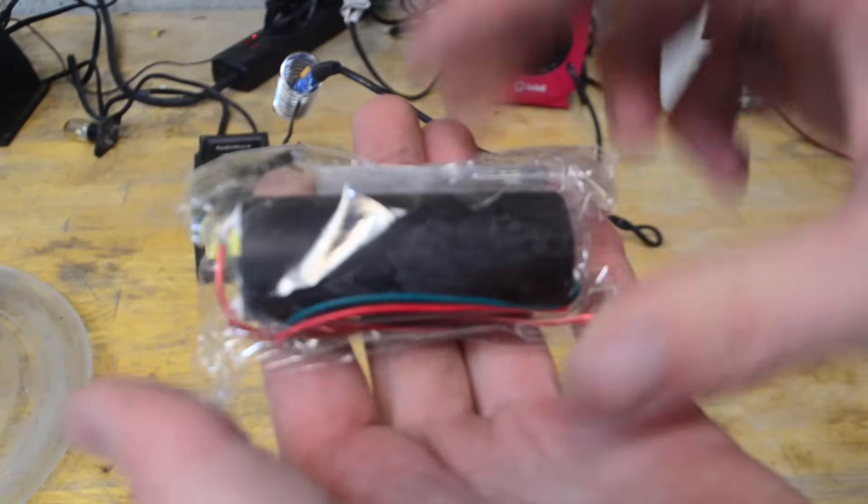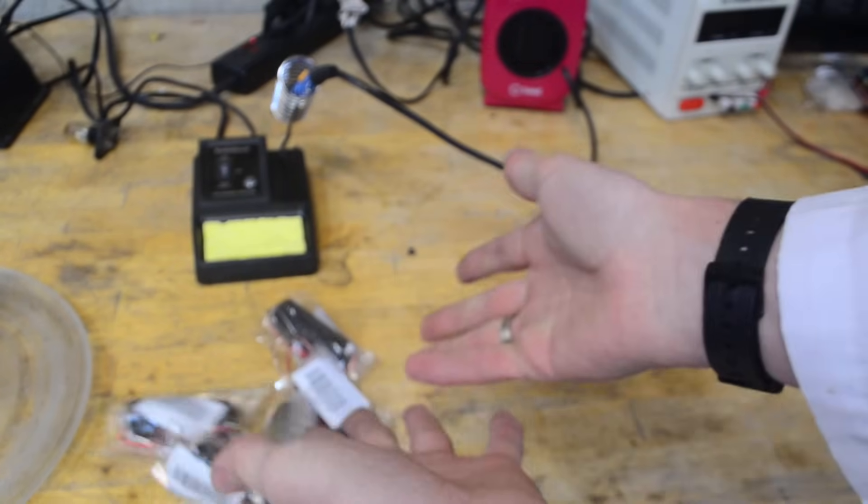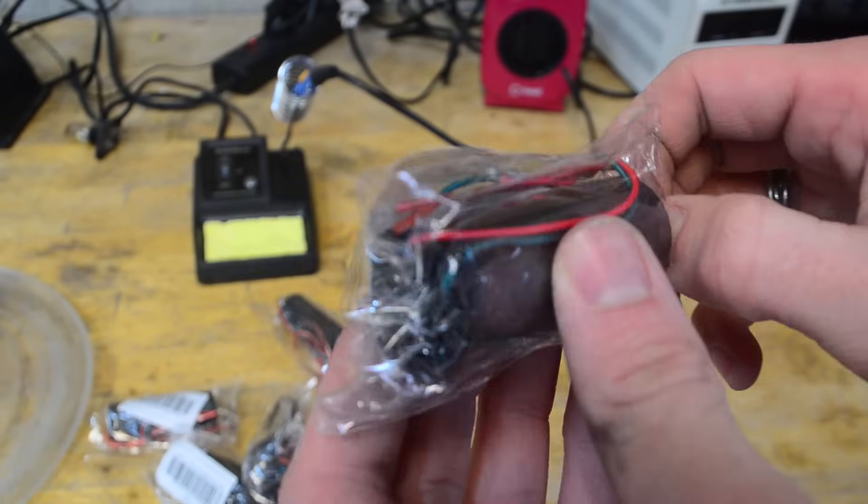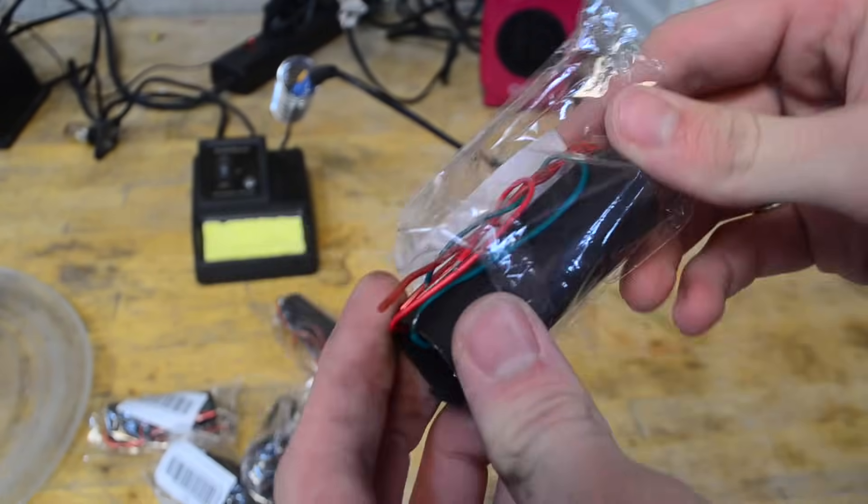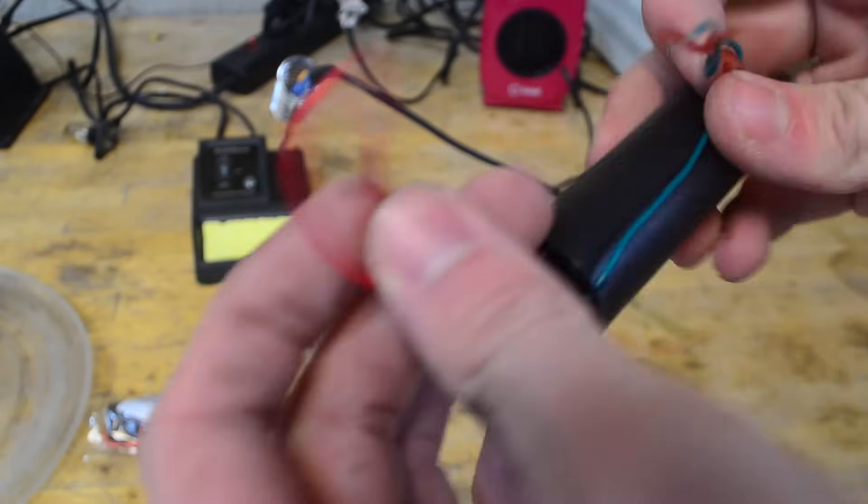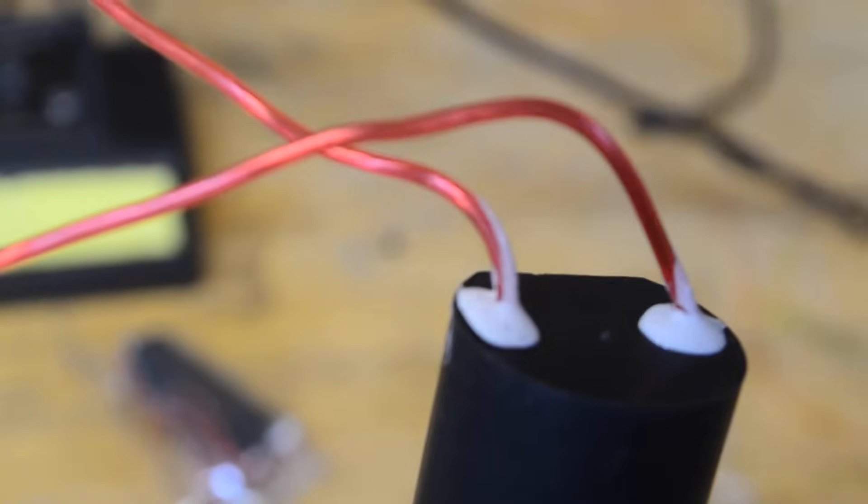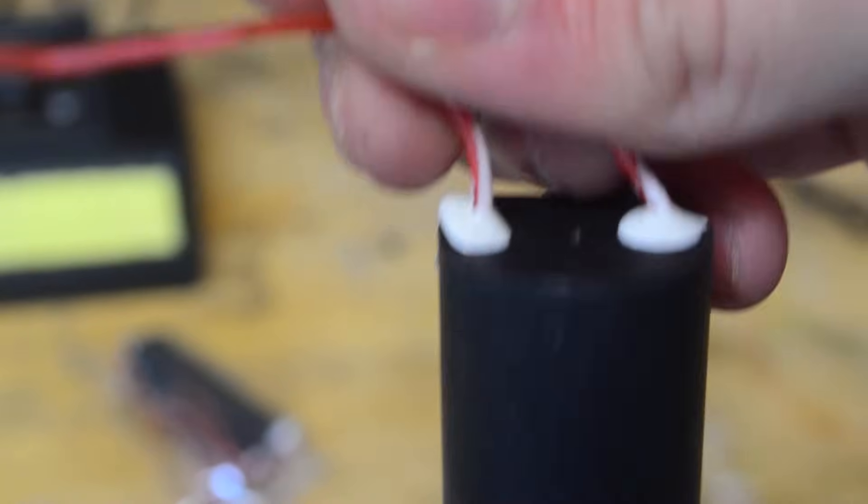The main component we're going to be using is this boost converter. I personally have a lot of these boost converters because they're super cheap. Basically on eBay I found each one for about $2.11. Taking it out of its package, you can see there are four wires coming out. The red and green wires at the bottom are for positive and negative. The two shiny red wires coming out of the top are the high voltage outputs of the boost converter.